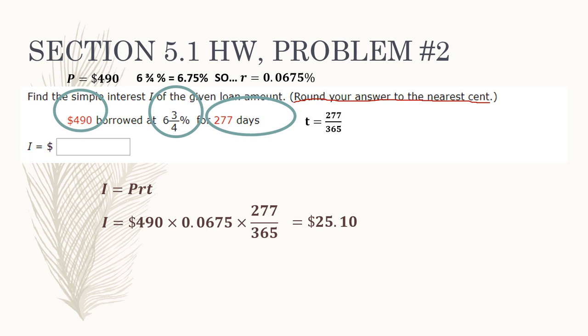So $25.10 is how much interest you're going to have to pay to the bank or financial institution that you borrowed the money from, if you borrow $490 at six and three-quarters percent interest for 277 days. Note that in the homework, they've already put the dollar sign in, so you don't need to include it in your answer. Next, I'm going to show you a screen recording of how I type this in my calculator.